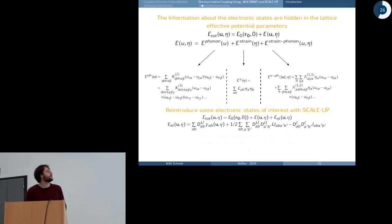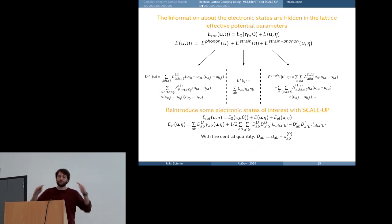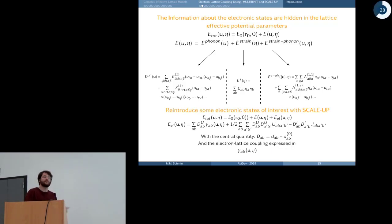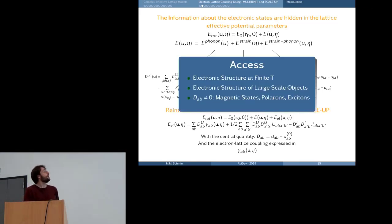So we can reintroduce some electronic states of interest with ScaleUp in the way Pablo described, with a Hubbard model that has been rewritten in a way that now the central quantity is the density, a different density matrix, such that—which is clever in the sense that as long as we're staying on the Born-Oppenheimer surface that we want to sample, this quantity is zero and the electronic part doesn't do any correction. But we still get access to the electronic structure at any given atomic configuration, as the electron-lattice coupling is expressed in the explicit dependence of the hopping parameters on the atomic structure. And this gives us access then to the electronic structure at finite temperature or of large-scale defects like domains or skyrmions and so on.